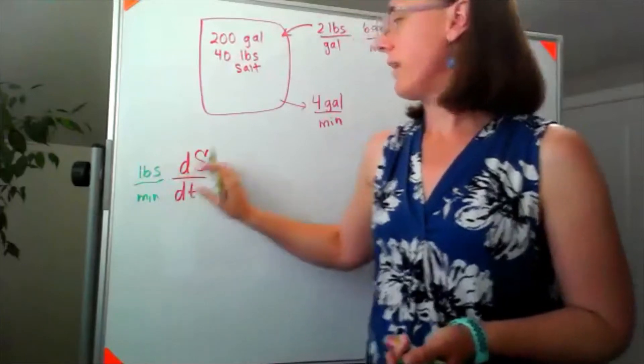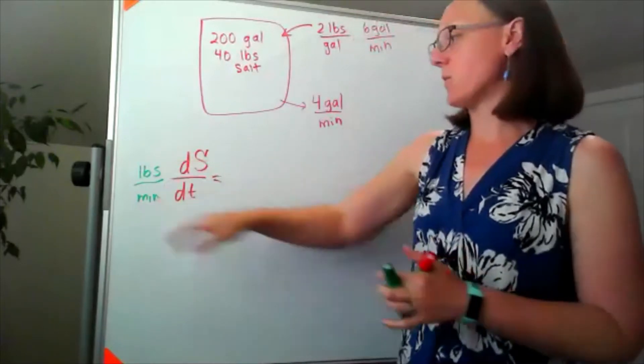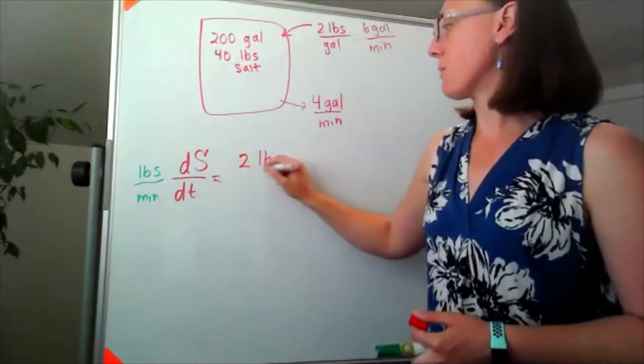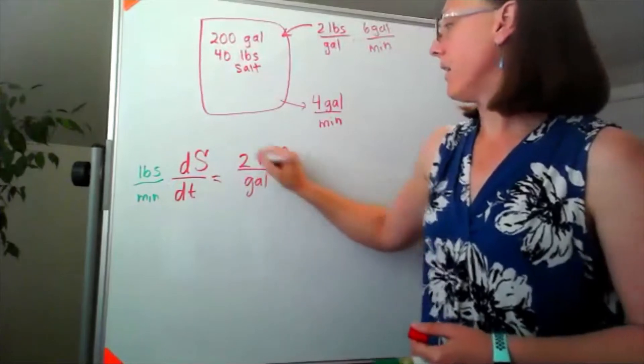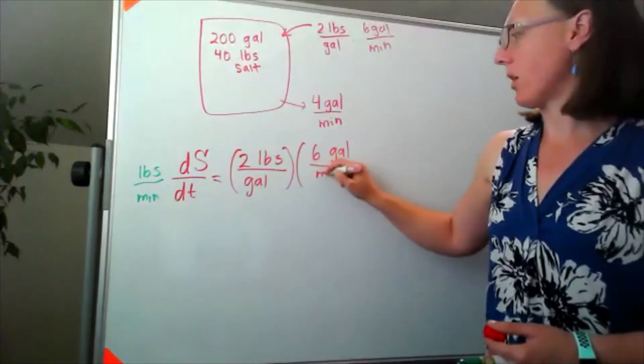Whatever is going on here with our in minus out, we need units of pounds per minute. What's coming in, I've got two pounds per gallon and that is flowing in at six gallons per minute.